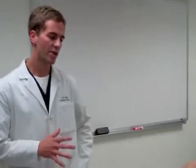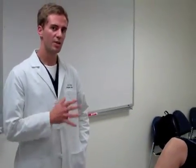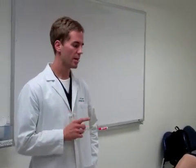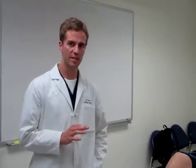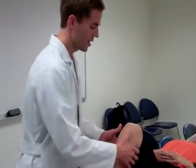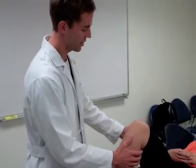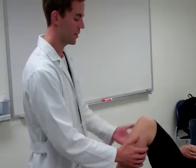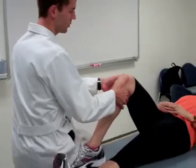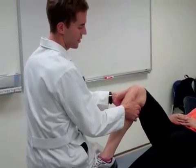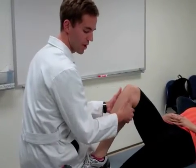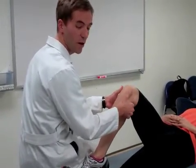We're now going to begin our examination of the ligaments and stability of the knee, as well as muscle strength about the knee. The first and most classic test for the ACL is the anterior drawer sign: patient supine, knee at 45 degrees, hip at 45 degrees. Anchor the foot and pull on the tibia to see if there is any anterior motion of the tibial plateau on the femoral condyles.